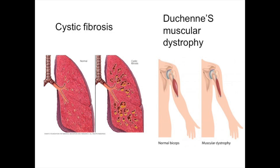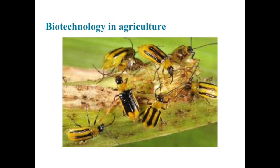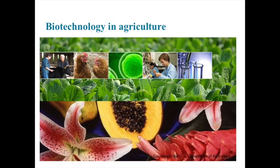Biotechnology has also been applied to agriculture. For example, genetically altered bacteria have been developed to protect fruit against frost damage, and bacteria are being modified to control insects that damage crops. Bacteria have also been used to improve the appearance, flavor, and shelf life of fruits and vegetables.